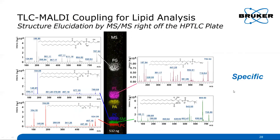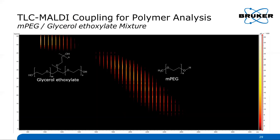With MS-MS data from TLC spots, you are absolutely specific in the interpretation of your data. This approach also works for polymers — for example, a glycerol ethoxylate star polymer is shown here, along with a methylated variant, both separated according to mass and displayed with different mass spectra.